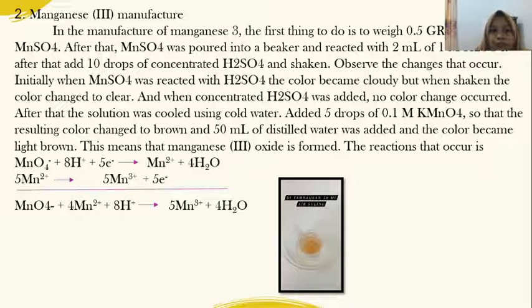After that, the solution was cooled using cold water, then added 5 drops of 0.1 M KMnO4 so that the resulting color changed to brown. 50 ml of distilled water was added and the color became light brown. This means that Mn2O3 is formed.